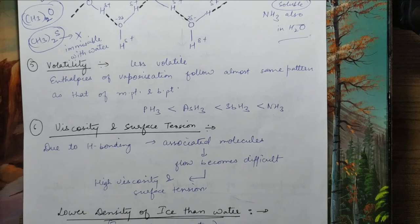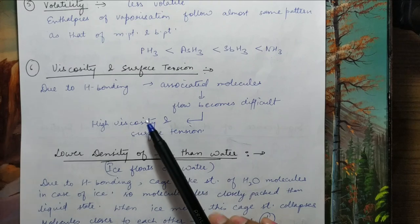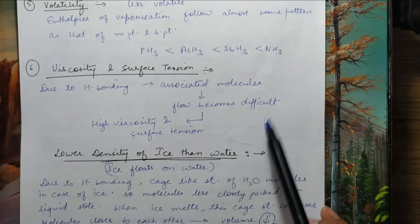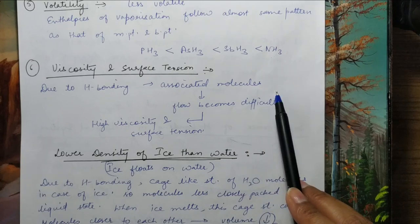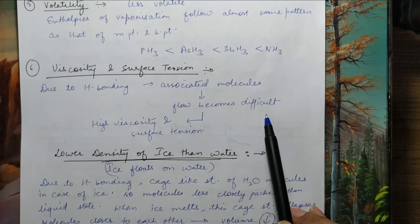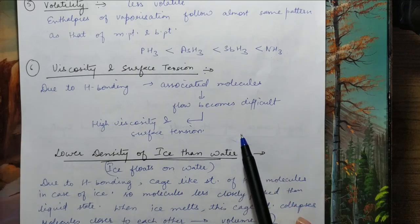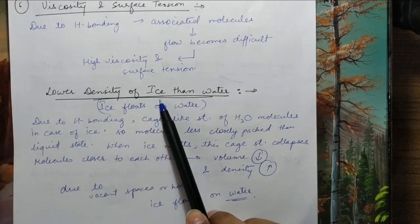The next property is viscosity and surface tension. Due to hydrogen bonding, molecules associate and flow becomes difficult. When molecules are joined together, they cannot flow easily — fluidity decreases, so viscosity and surface tension increase.